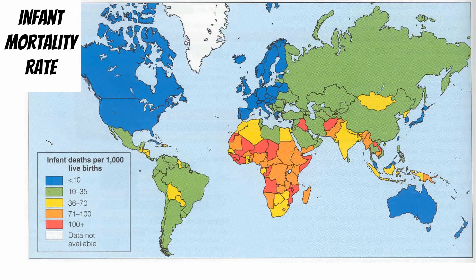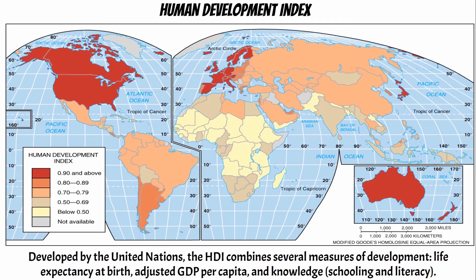Remember, there are less developed countries, more developed countries, and developing countries. All of this data can be aggregated into one choropleth map called the Human Development Index, or HDI. It takes all of this data and aggregates it into one map by country. The most developed parts of the world are western Europe, Japan, Australia, New Zealand, and North America, and then you have a scale of developing, less developed, and least developed.